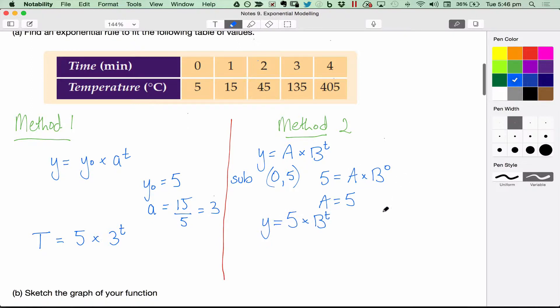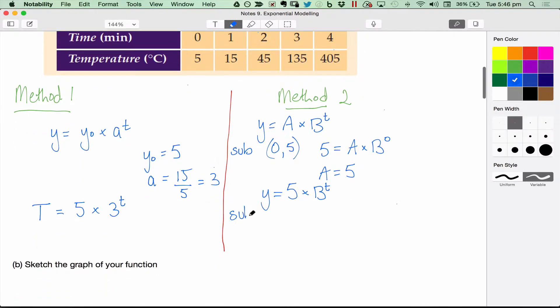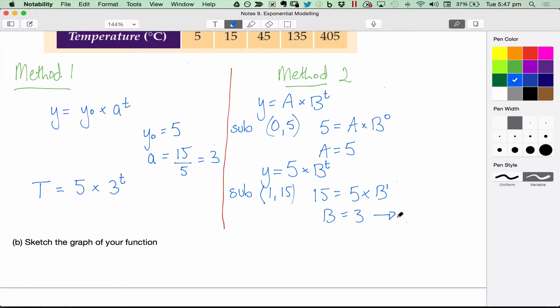We still need to find out what b is, so we're going to use our second value, which is 1, 15. You always need pairs of values for this method. 15 equals 5 times b to the 1. b to the 1 is just b, so 5b equals 15, b equals 3.